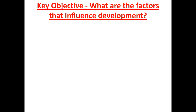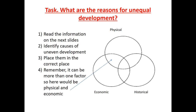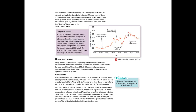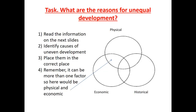You then looked at what are the factors that influence development, and we broke them down into physical, economic, and historical. You then looked at a range of information over the next couple of slides and had to think about which factors were which. To briefly summarize: if we think that Africa is the poorest continent in the world, with countries still in stage one of the Demographic Transition Model, with a really low HDI, high birth rates and death rates, low life expectancy and lack of investment - we can summarize all of that from those slides.